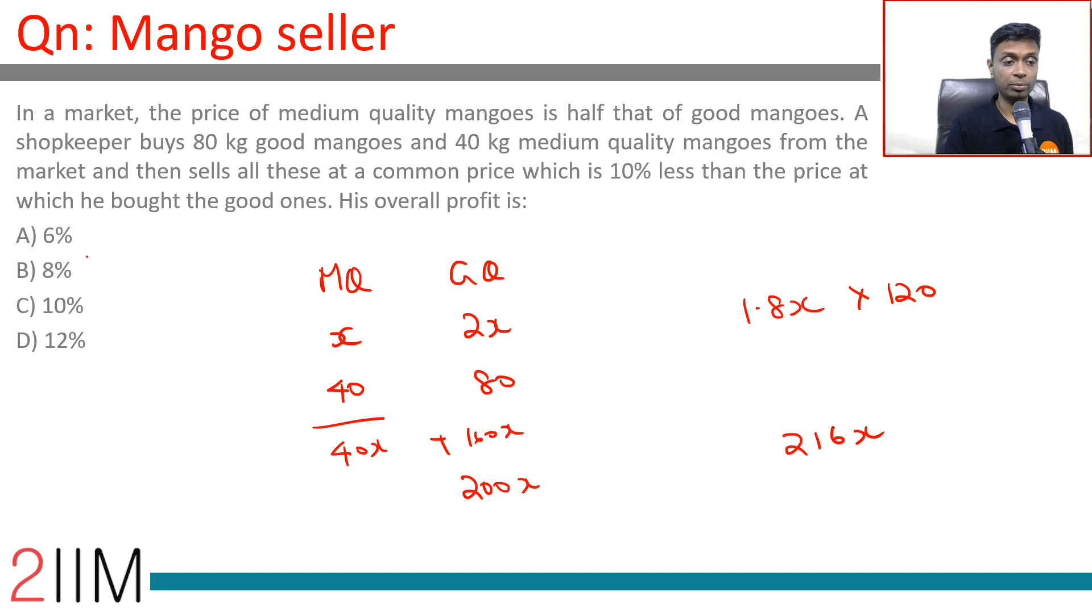This gives a profit of 8 percent. From 200x to 216x is the same ratio as 100 to 108, which is a profit of 8 percent.